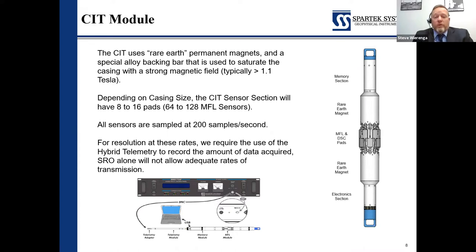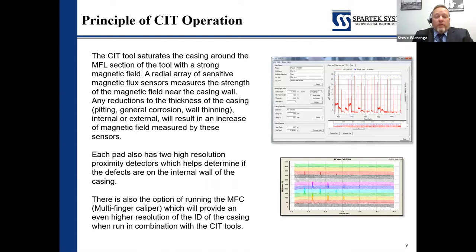There is a surface readout component to this tool, although it's a hybrid tool, so a lot of the information is stored downhole — we'll talk about that in the acquisition section. Once we have all of those sensors circumferentially around the tool, each sensor creates a data point. That data point is then combined to give us a full map of the casing wall. The software will automatically pick collars once it's processed, and then give us a casing map of potential damages.